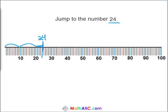Let's try another problem. Now we need to jump to the number 36, so let's count by 10s first: 10, 20, 30. And now we need 6: 1, 2, 3, 4, 5, 6. So 36 would be right here.